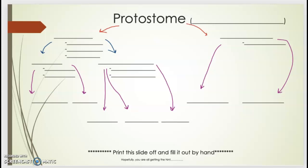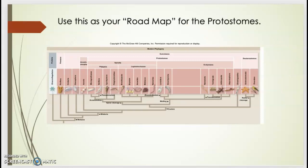There are seven phyla we're going to talk about as we go through the protostome lectures. This overview will lead into those individual lectures. I want you to print it off and fill it out as we go through this first part, reinforcing what the key features are of each group and how they fit within the protostomes. This is the roadmap for the protostomes, straight from the textbook using molecular information.